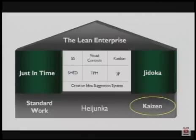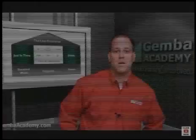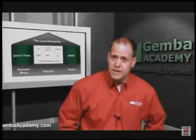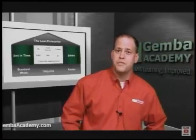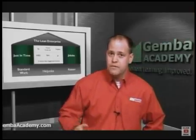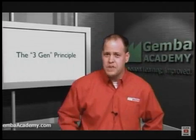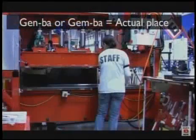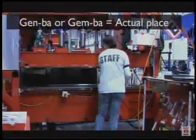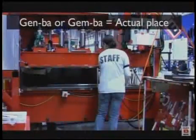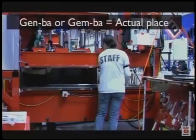Kaizen is also a cornerstone of the Lean enterprise, as it works together in harmony with other Lean tools and concepts such as standard work and Heijunka, or level loading. In order to effectively practice Kaizen, we must first understand three key concepts referred to as the Three Gens, sometimes called the Three Actuals. First, when we do Kaizen, we must go to the Gemba — the word literally means the actual place, the place where work is done — whether that's the factory floor, a construction site, or the operating room in a hospital.